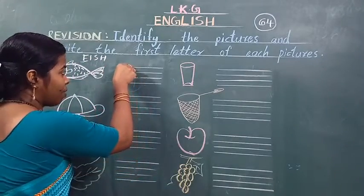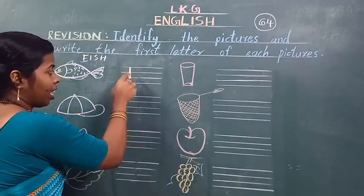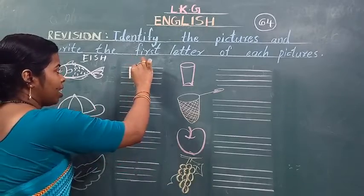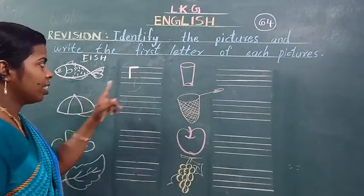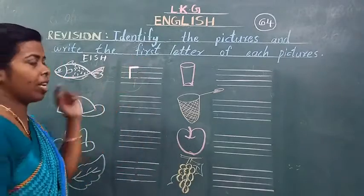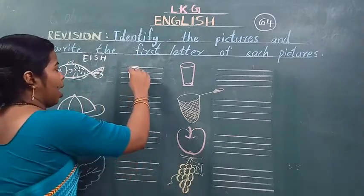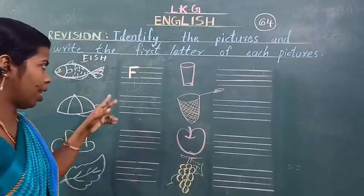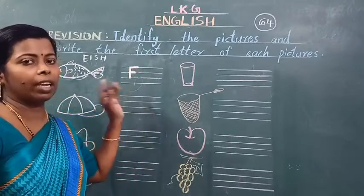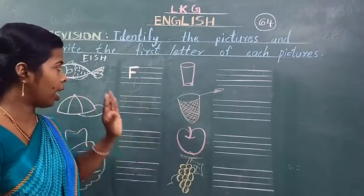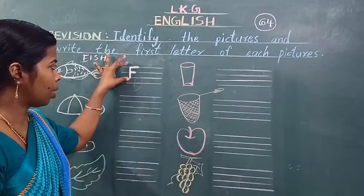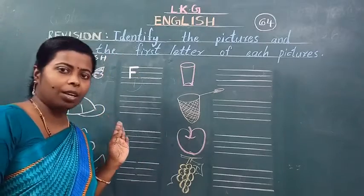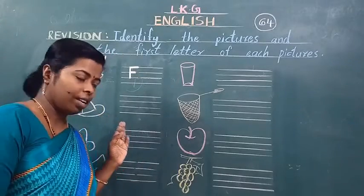Deekho, F kaisa likhena hai? Standing line, sleeping line, and one more sleeping line. This is F. Likheneket time aapko dhyaan rakhna — dono line mein mila ke likhena hai. And see the next picture.